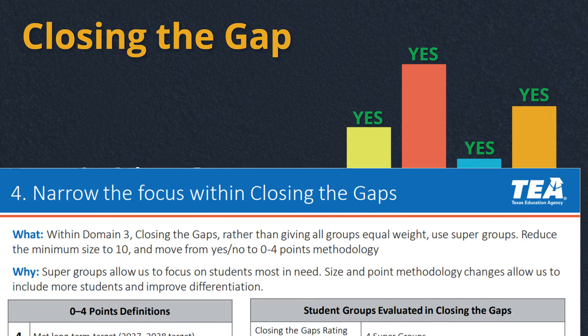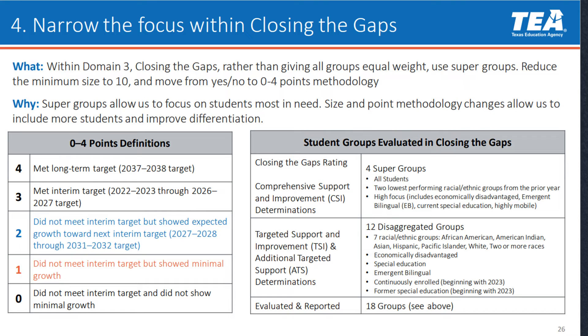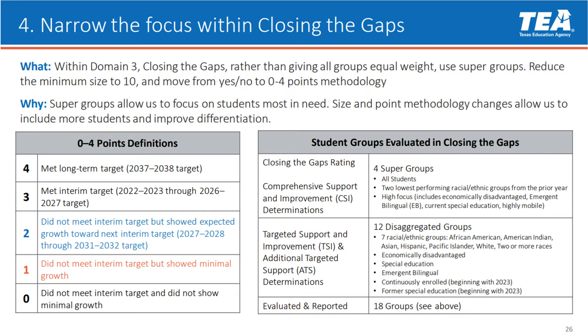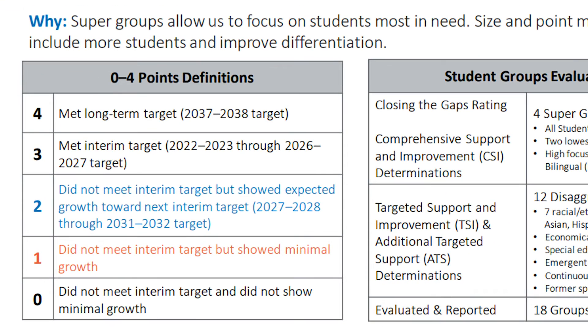The state is now proposing a change that creates a zero to four scale that grades progress toward long-term state targets that apply to expected student performance in the 2037–2038 school year. Yes, I said that correctly. The state will only award the maximum of four points if student groups meet the 2037–2038 target for their population. This change has huge ramifications.